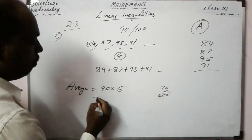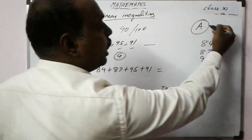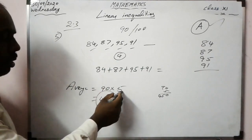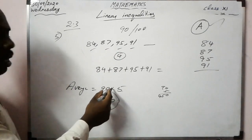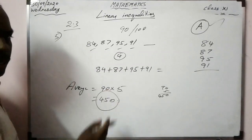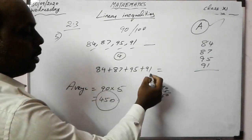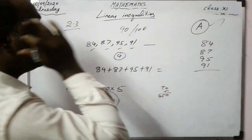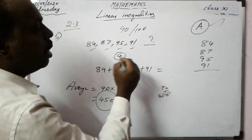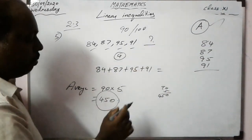Adding: 84 + 87 + 95 + 91 = 357. To get a total of 450, the fifth subject mark must be at least 450 − 357 = 93. So if he gets 450 marks in total, he will get an A grade.